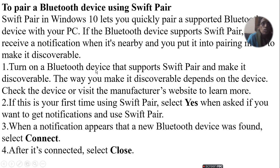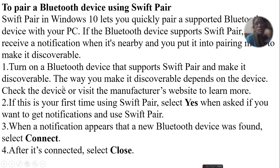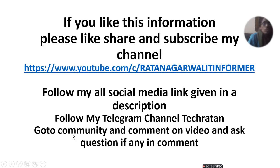Turn on the Bluetooth device that supports Swift Pair and make it discoverable. The way you make it discoverable depends on the device. If this is your first time using Swift Pair, select Yes when asked if you want to get notifications and use Swift Pair. Then a notification will appear that a new Bluetooth device was found — select Connect to connect your device.